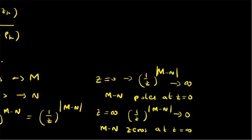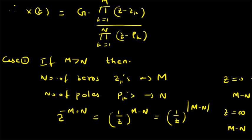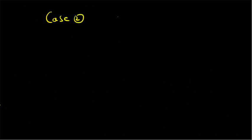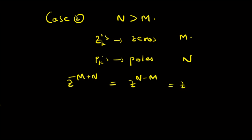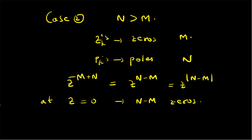Next, consider case two where n is greater than m. In that case, the Zk's are all zeros with number m, and the Pk's are all poles with number n. The term Z power minus m plus n can be written as Z power n minus m, which is a positive power of Z since n is greater than m. So at Z equal to zero, we have n minus m zeros, and at Z equal to infinity, we have n minus m poles. Again in total, the number of zeros and number of poles are the same.